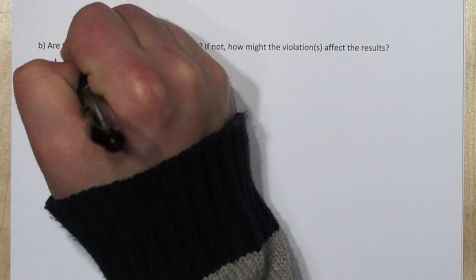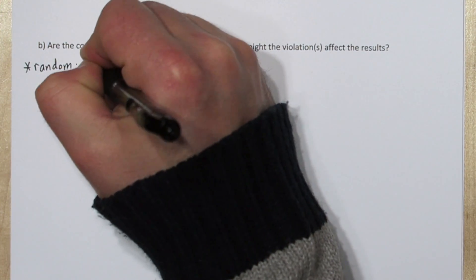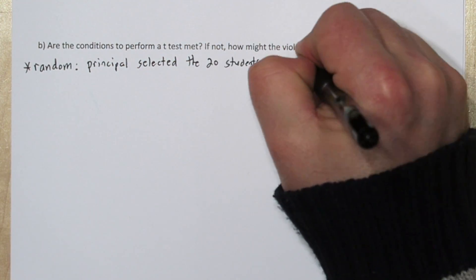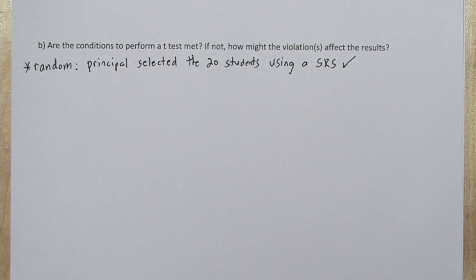To perform a t-test, there's three conditions. The first is the random condition. Since the principal selected the 20 students using a simple random sample, this condition is met, and this is the most important condition.